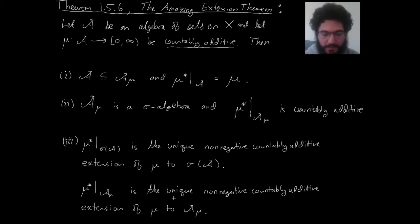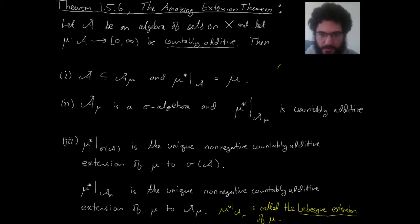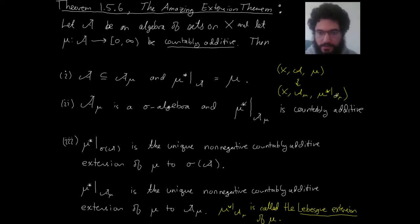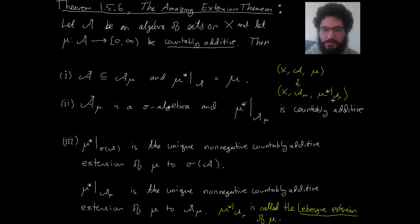Let's sneak in a definition: the function mu star on A_mu is referred to as the Lebesgue extension of mu. If you start with the data — a set X, an algebra of sets, a countably additive function — and then pass to the data X, A_mu (a sigma algebra), and mu star on A_mu, that process is called Lebesgue completion. You're starting with an algebra of sets (not necessarily a sigma algebra) and growing the class A to the mu-measurable sets, extending mu in the process.